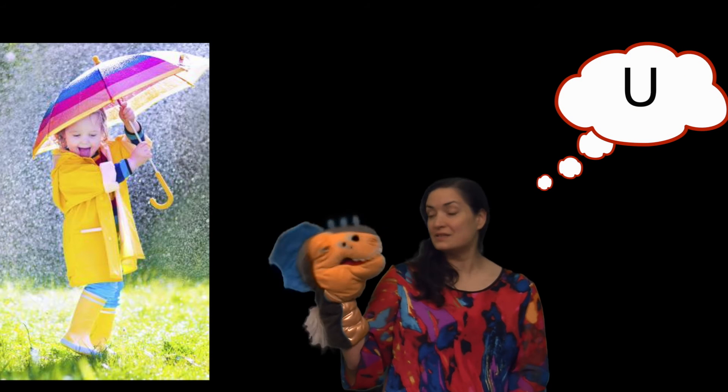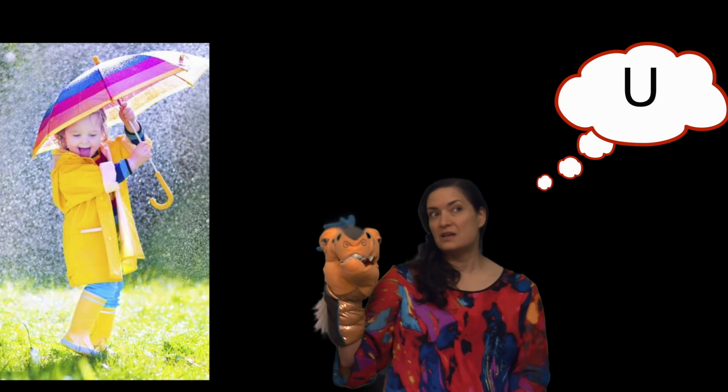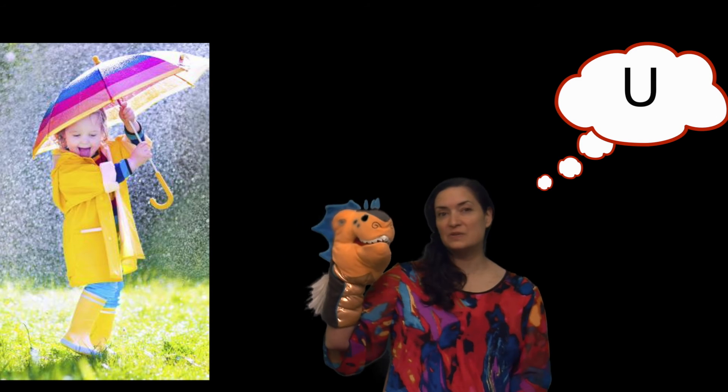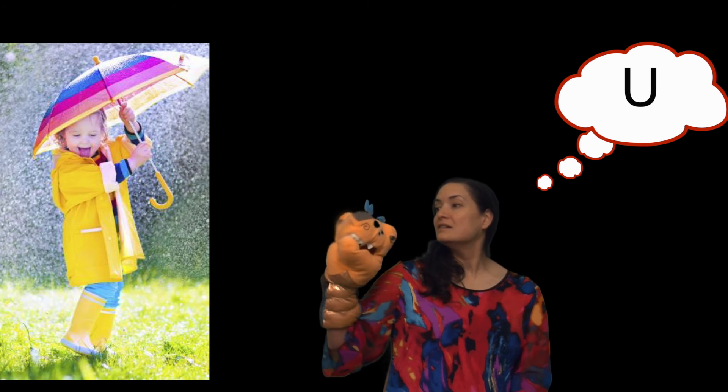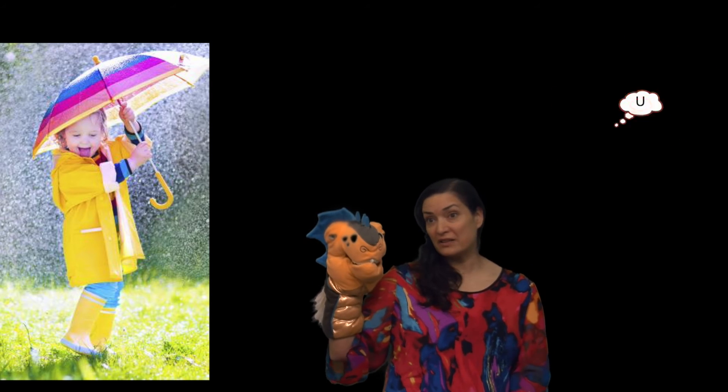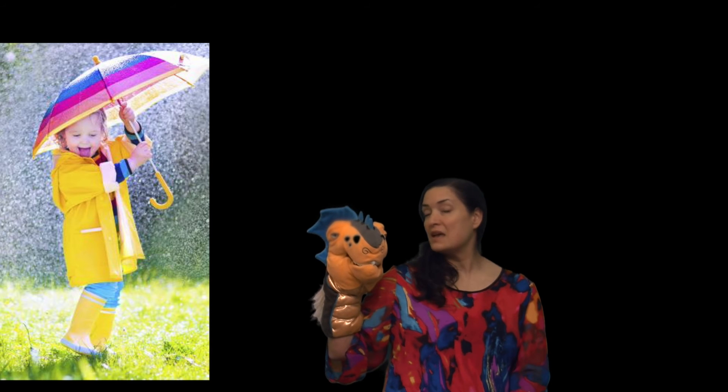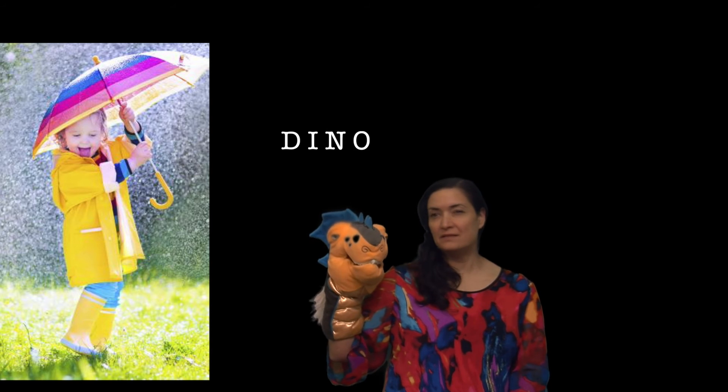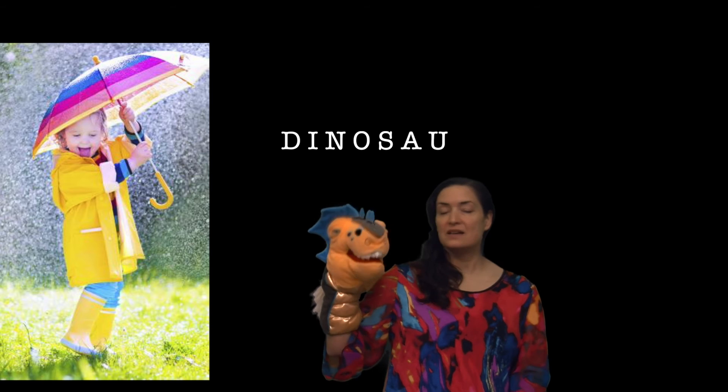Umbrella is a U word. U is the next letter in dinosaur. An umbrella keeps us dry when it's raining outside. Yes, when it's raining outside, we need an umbrella to keep us dry. D. I. N. O. S. A. U. Umbrella.